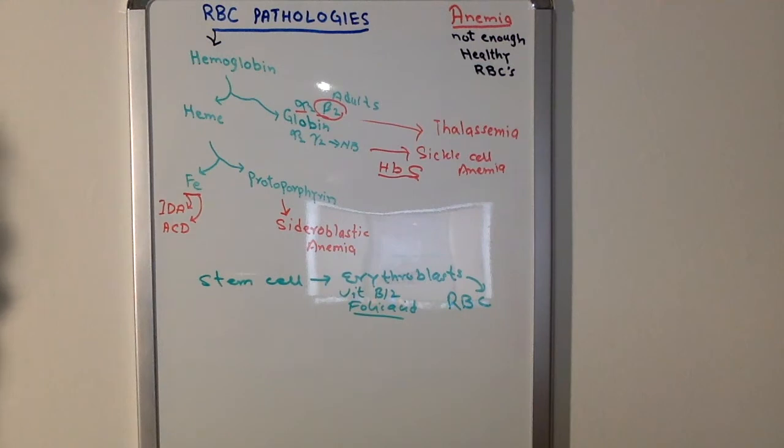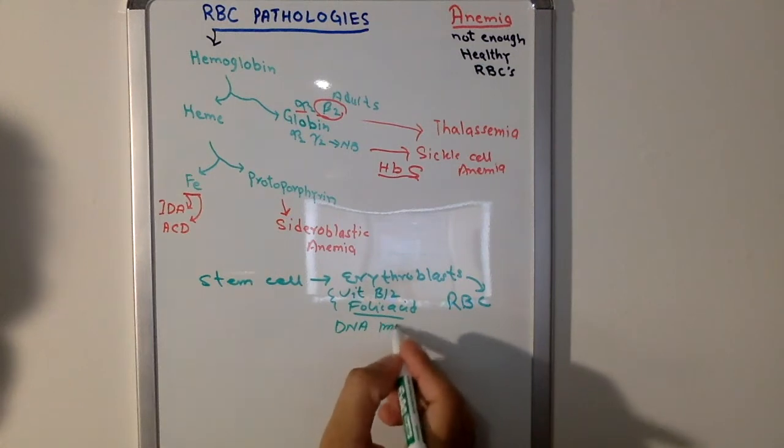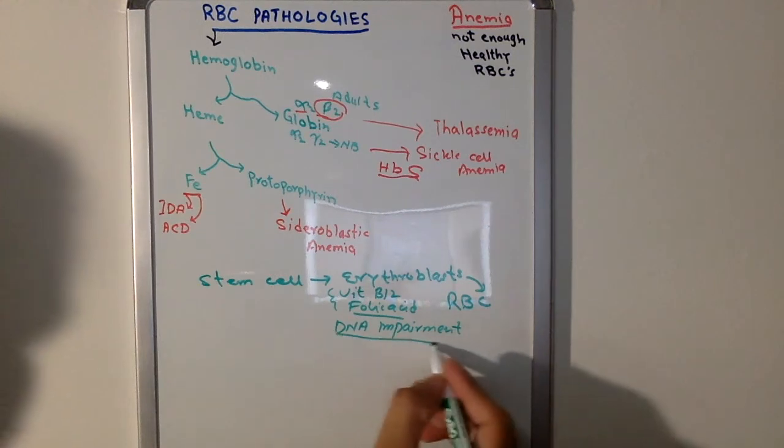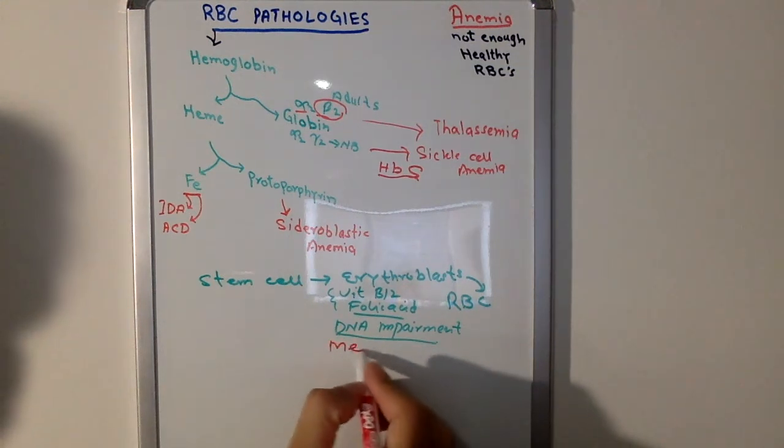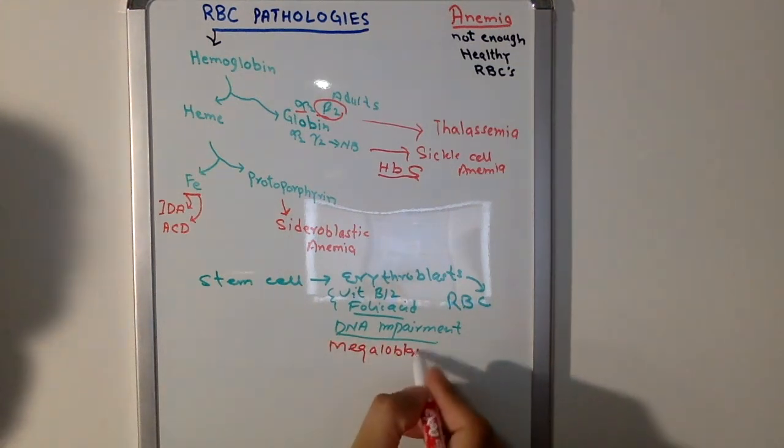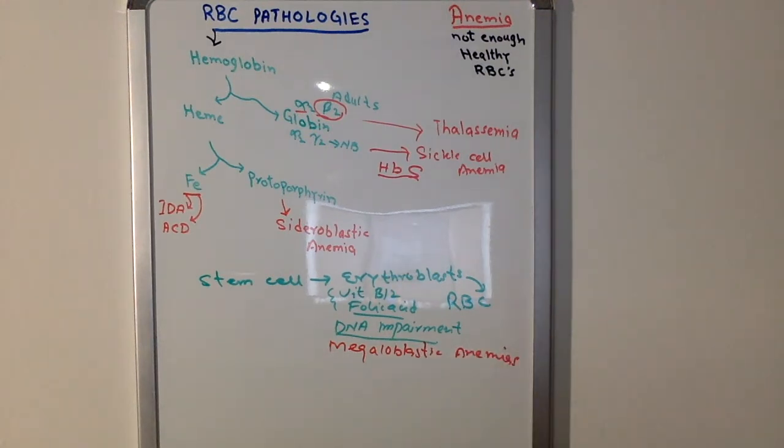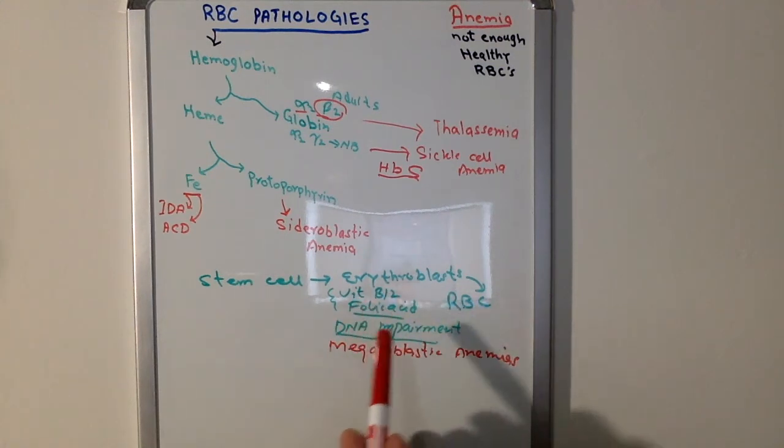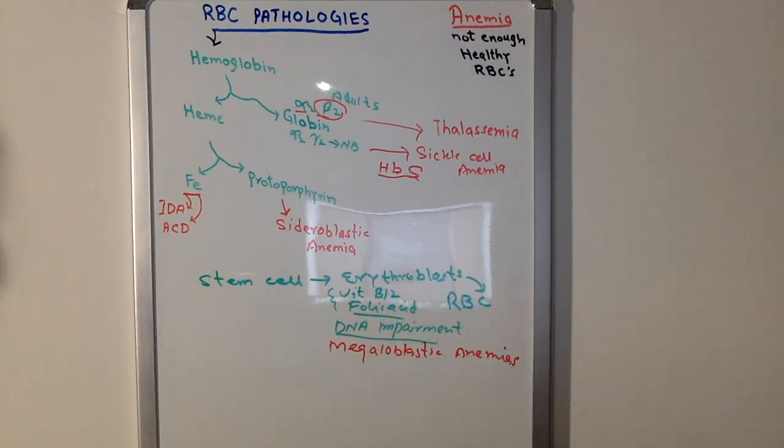If we don't have enough vitamin B12 or folic acid, then it causes DNA impairment. And the problem with DNA impairment, we call it megaloblastic anemias. And there are two of them: vitamin B12 deficiency and folic acid. In vitamin B12 deficiency, we still see some neurological symptoms. In folic acid, there are no neurological symptoms.